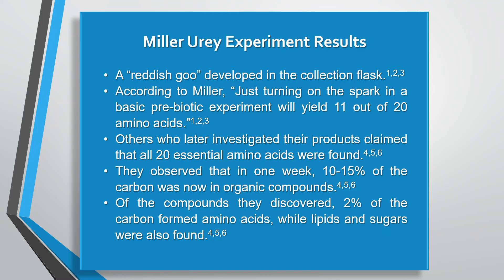This system was left to run continuously over weeks, and a reddish goo developed in the collection flask. According to Miller, just turning on the spark in a basic prebiotic experiment will yield 11 out of the 20 essential amino acids. Others who later investigated their products claimed that all 20 essential amino acids were found. In one week, 10 to 15 percent of the carbon was now in organic compounds, with 2 percent of the carbon forming amino acids, while lipids and sugars were also found.